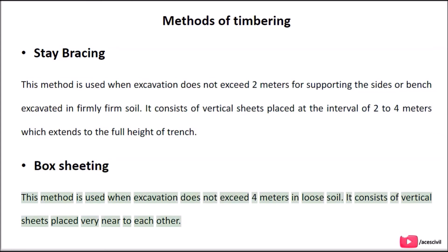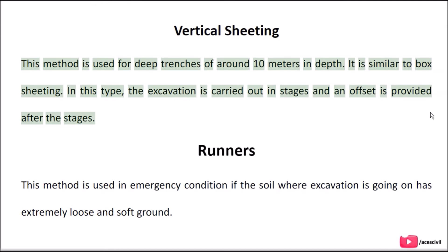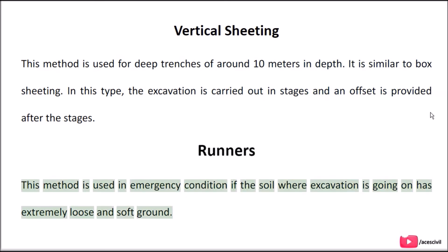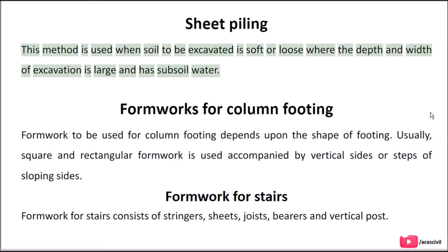Methods of Timbering: Stay bracing is used when excavation does not exceed 2 m for supporting the sides excavated in firm soil. It consists of vertical sheets placed at intervals of 2 to 4 m which extend to the full height of the trench. Box sheeting is used when excavation does not exceed 4 m in loose soil and consists of vertical sheets placed very near to each other. Vertical sheeting is used for deep trenches of around 10 m in depth, similar to box sheeting, where excavation is carried out in stages. Runners method is used in emergency conditions where the soil is extremely loose and soft. Sheet piling is used when soil is soft or loose, the depth and width of excavation is large, and there is subsoil water.